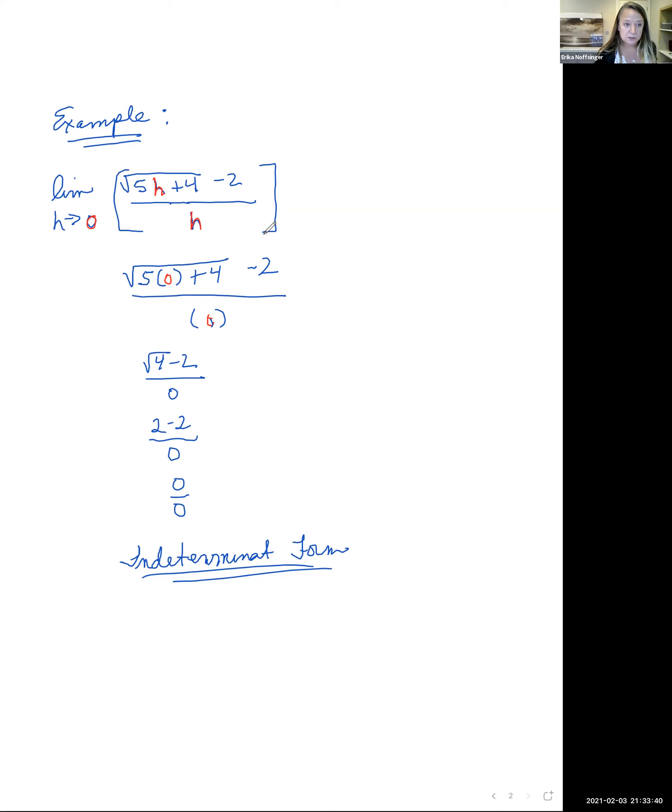So we want to multiply by the conjugate of this numerator and so that's just changing the sign that's in between these two groupings. And so we're going to multiply this whole thing by a fancy one. And that fancy one is going to be the square root of 5h plus 4 underneath the radical. Change this sign outside, so we're going to have a plus 2 all over, and we're multiplying by 1, so the same thing in the denominator, square root of 5h plus 4. Then outside of the radical is a plus 2.